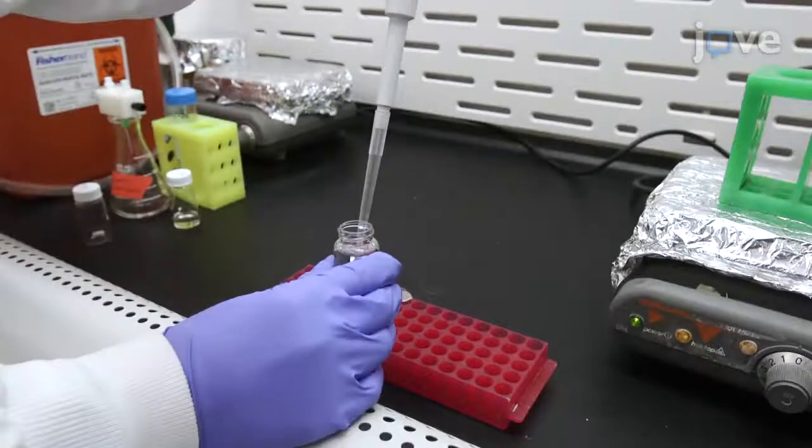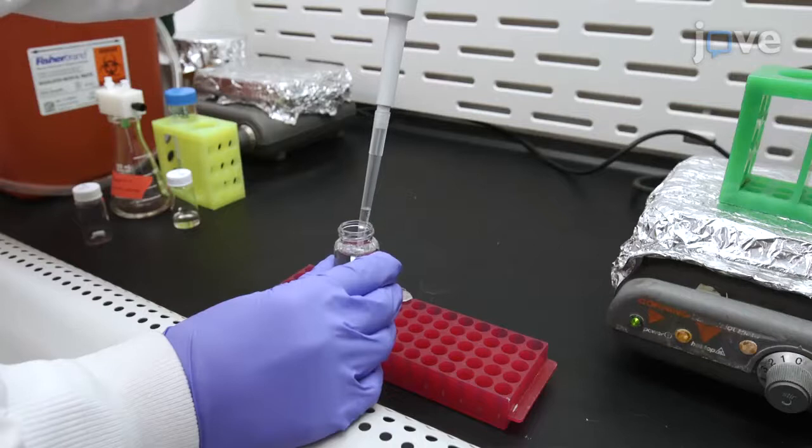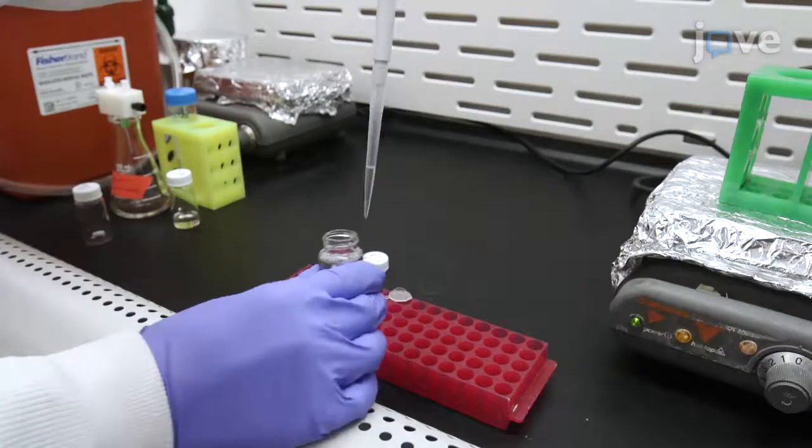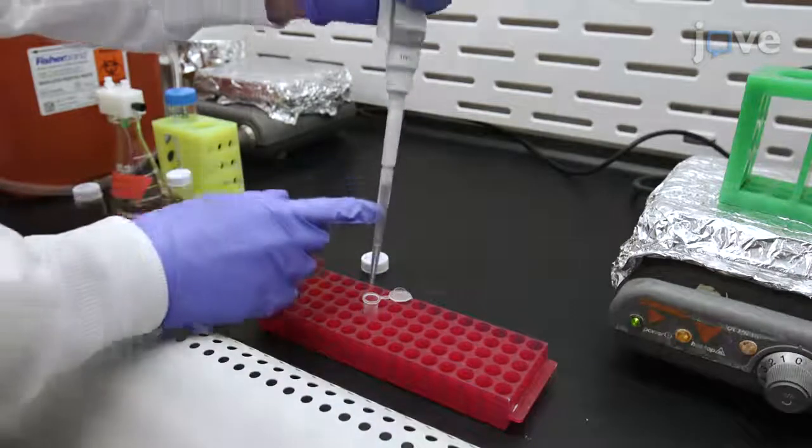Then, pipette 0.25 milliliters of a 10-milligrams-per-milliliter solution of a block copolymer stabilizer in THF into the same tube. Vortex them.